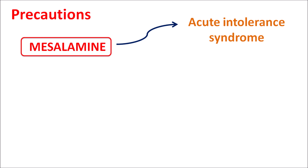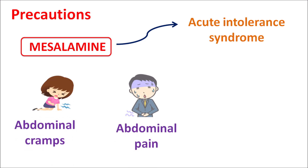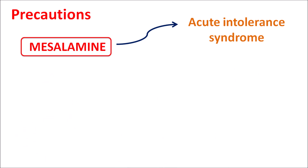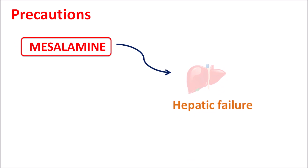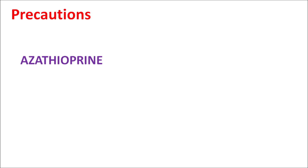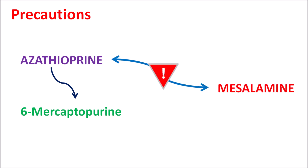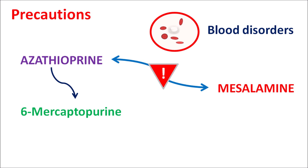Another important precaution is that mesalamine can induce acute intolerance syndrome. This syndrome results in symptoms resembling ulcerative colitis, including abdominal cramps, abdominal pain, bloody diarrhea, fever, headache, and skin rashes. If these symptoms develop after use of mesalamine, intolerance should be checked. Mesalamine can also produce hepatic failure, so in patients with any history of hepatic damage it should be given carefully. Additionally, azathioprine — an immunosuppressant that is converted to its active metabolite 6-mercaptopurine — can interact with mesalamine to produce blood disorders including anemia and neutropenia; caution is needed with co-administration.